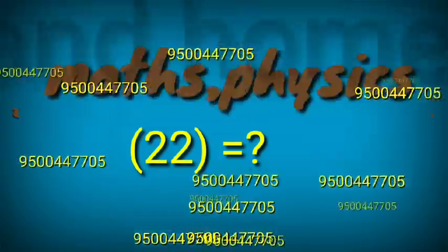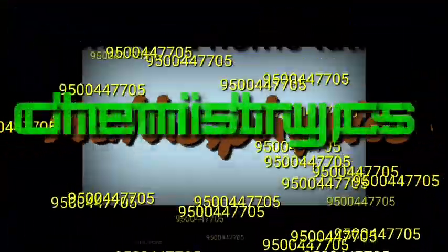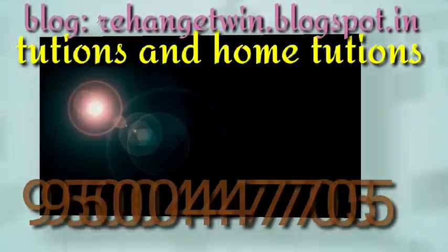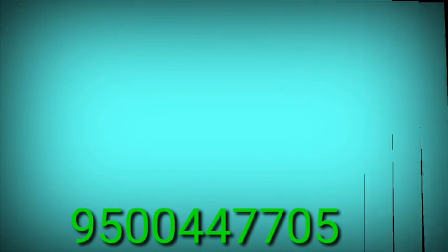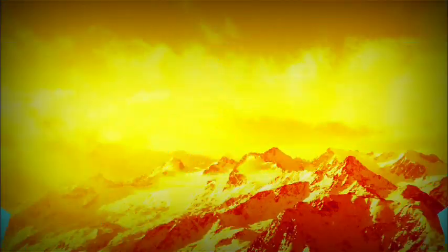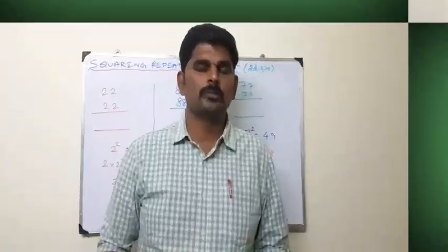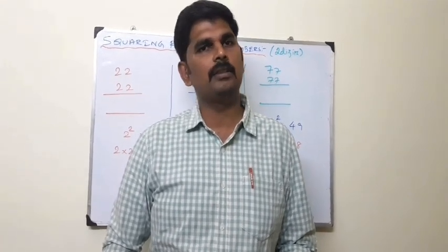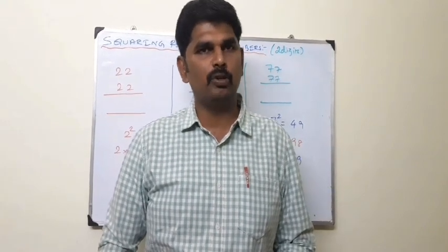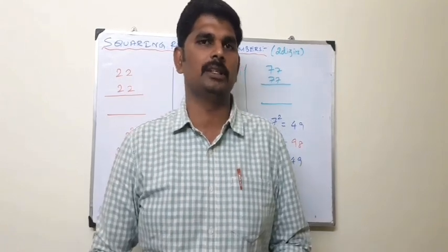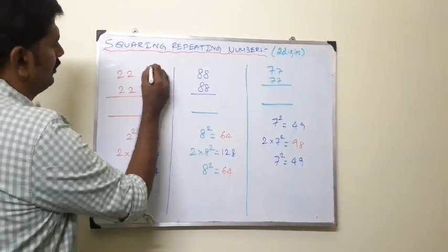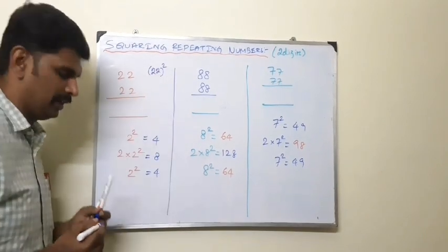This video is brought to you by R.I.P. In this session we will be discussing about squaring repeating numbers. Already we have seen lots of squaring tricks. In this session we are going to look at squaring two digit repeating numbers. That means 22 into 22, or 22 squared. The two are repeating numbers.